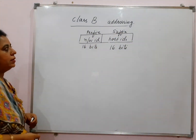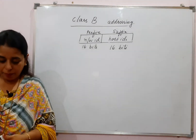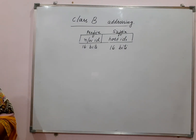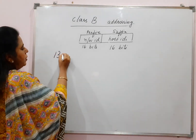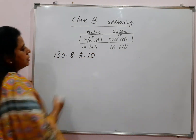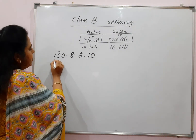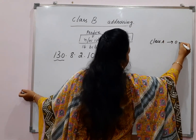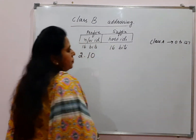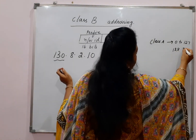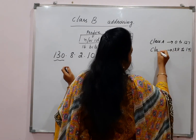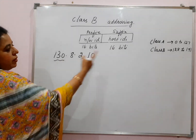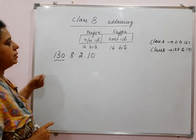Given an IP address, you need to determine which class that IP address belongs to. Let us take an example: 130.8.2.10. Look at the first byte. For Class A, the first byte falls between 0 to 127. But for Class B, the range is 128 to 191. The first byte here is 130, which lies in this range, so the given IP address is a Class B address.